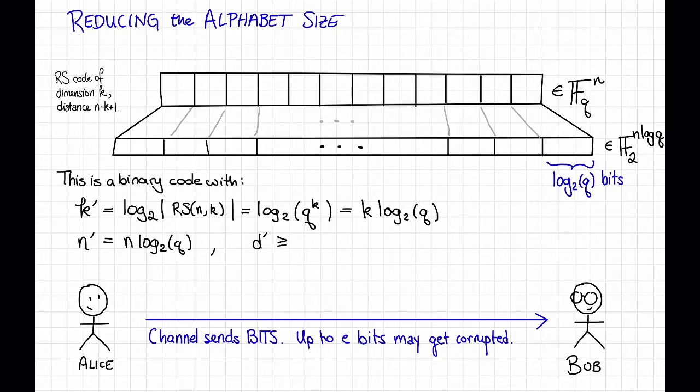is that d prime is at least d, or n minus k plus 1, which was the distance of the original code. The reason that we get d here and not d log q, which you might expect based on what happens with these other things, is that intuitively, if we corrupt a single bit here,